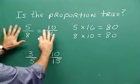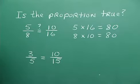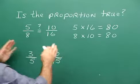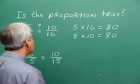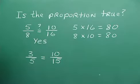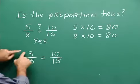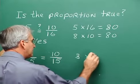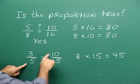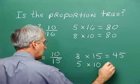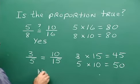When we're trying to decide whether or not a proportion is true, the equality is really questionable. We decide that it is true because of the cross multiplication equality. Now, what about 3 fifths and 10 fifteenths? We cross multiply: three times 15 along this diagonal is 45. And then going along the other diagonal, five times 10 would be 50. These are not equal to one another, so this proportion is not true.